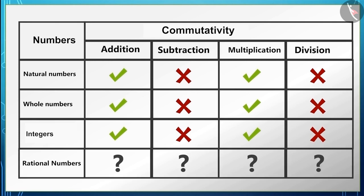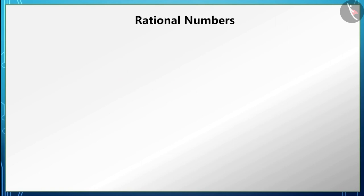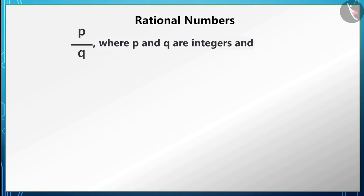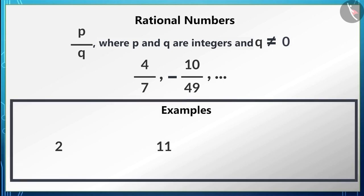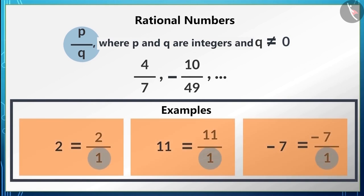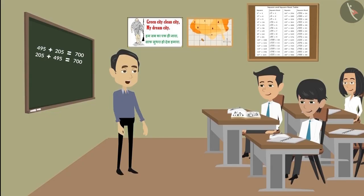Now let's discuss the commutative property of rational numbers. Rational numbers are numbers that can be written in the form p/q, where p and q are integers and q is a non-zero number — such as 4/7, −10/49, etc. We can also write natural numbers, whole numbers, and integers as p/q by writing 1 as the denominator, so these are also rational numbers.